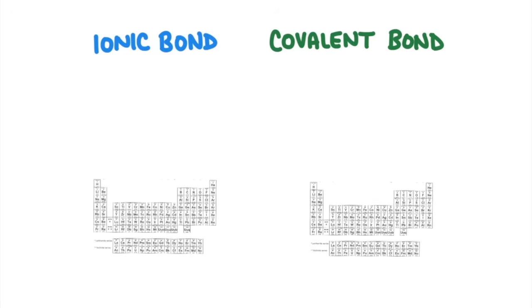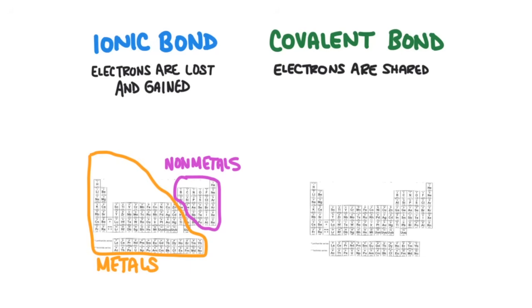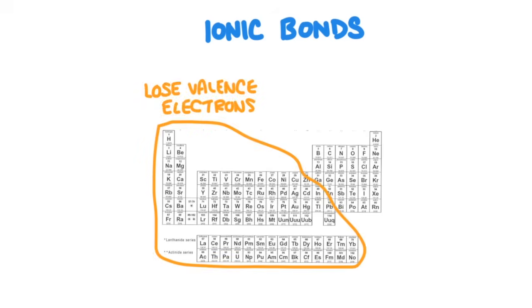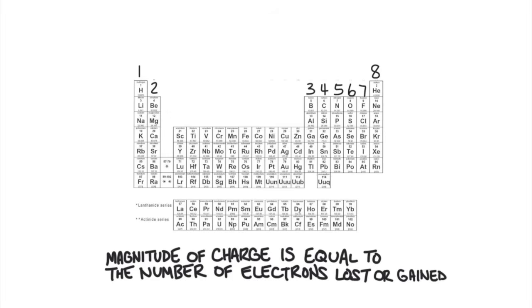When ionic bonds form, one element will lose valence electrons and the other element will gain valence electrons. In general, ionic bonds form between metals and nonmetals. When a covalent bond forms, two elements will share valence electrons. In general, covalent bonds will form between two nonmetals. Elements on the left side of the periodic table will lose valence electrons to form positively charged ions, and elements on the right side will gain electrons to form negatively charged ions. The magnitude of the charge will be equal to the number of electrons that were lost or gained.